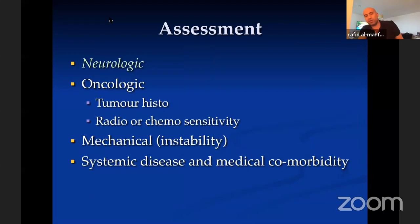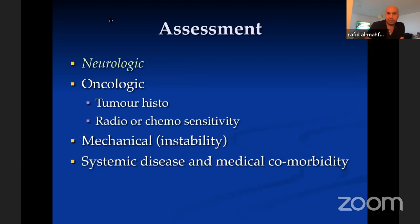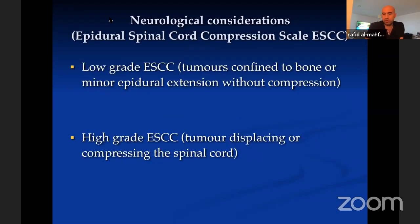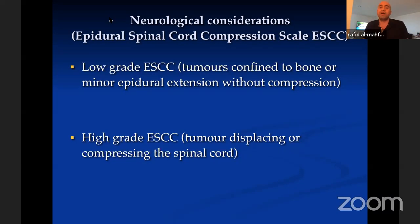Why did I choose to operate, and why that operation? We come back to those four assessment points. For neurological assessment, a useful common language is the Epidural Spinal Cord Compression (ESCC) scale. Crudely, we can summarize into low-grade compression — tumor confined to bone — or high-grade — tumor compressing the nerves or cord. You can hear me mention epidural compression extension into the canal; this scale helps especially when conveying information about these patients over the phone.